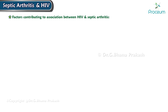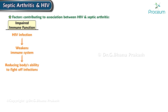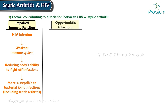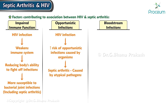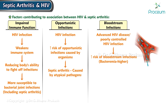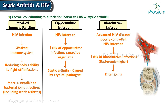Factors contributing to the association between HIV and septic arthritis include impaired immune function, as HIV weakens the immune system and reduces the body's ability to fight off infections, making individuals more susceptible to bacterial joint infections. HIV also increases the risk of opportunistic infections caused by atypical pathogens, and in advanced or poorly controlled HIV disease, the risk of bloodstream infections including bacteremia is higher, with bacteria entering joints through the bloodstream.